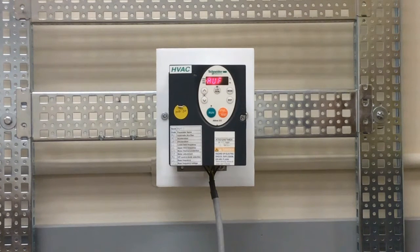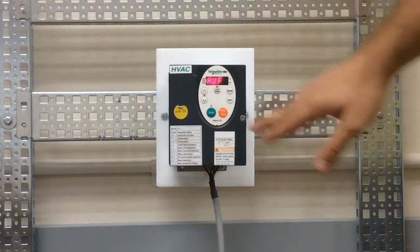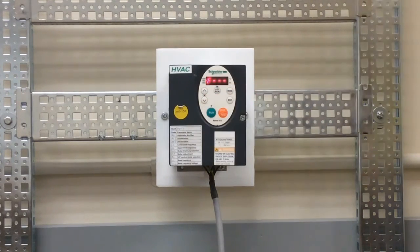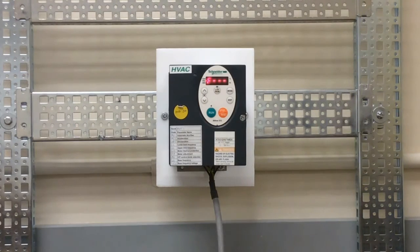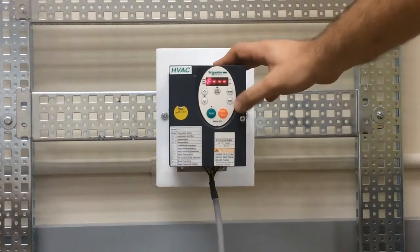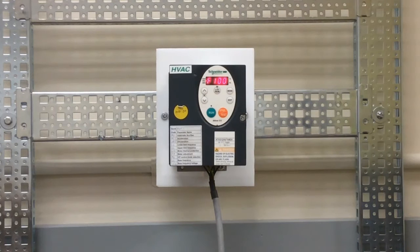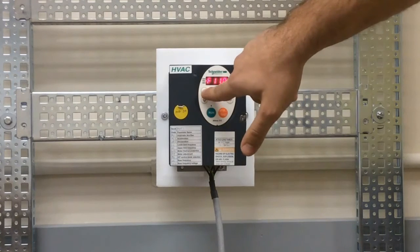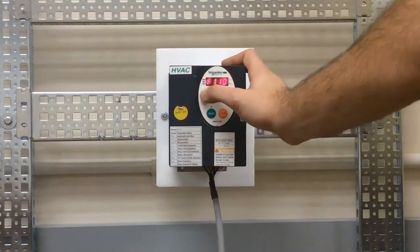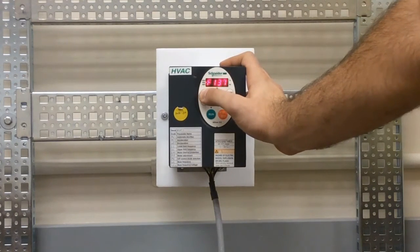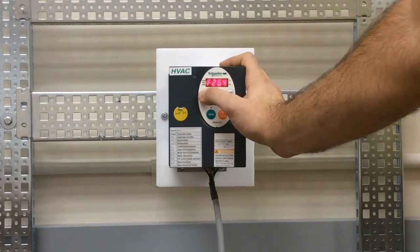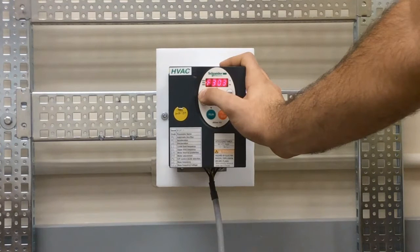When you see AUF on your main display, use the down arrow key until you get to F (as in Frank) dash dash dash. Once you see this, press enter. In this list, you have to arrow all the way up to parameter F360. You can press and hold the up arrow key to get there faster.